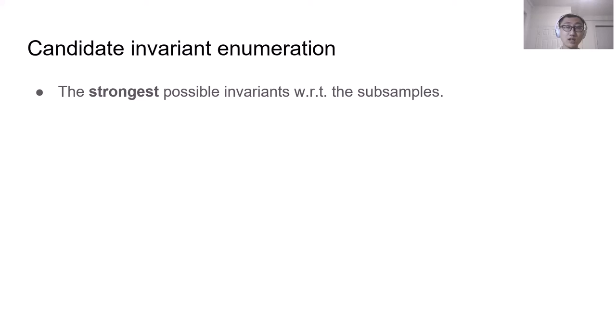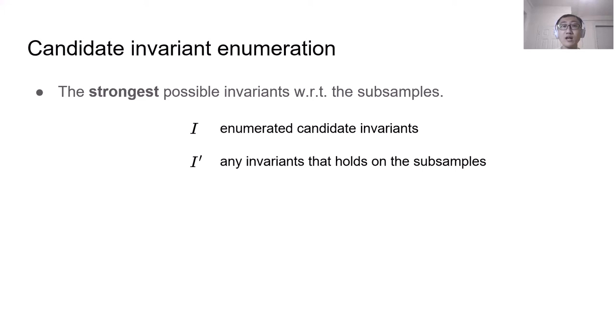You can find the detail of the enumeration algorithm in the paper. The key property is that it gives the strongest possible invariants with regard to the subsamples under the bounded formula size. That is, let I be our enumerated candidate invariant. Then for any I' that holds on the subsamples, I' can be implied by I. Because we know the correct invariants must hold on the subsamples, our enumerated invariants must be at least as strong as the correct invariants.